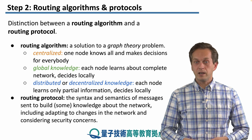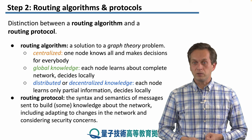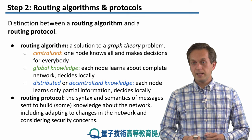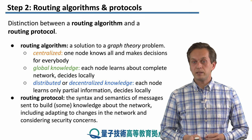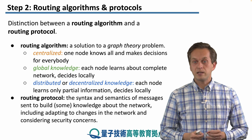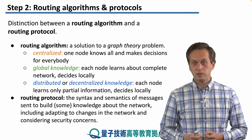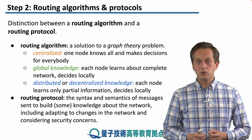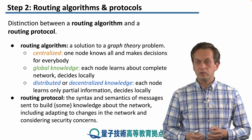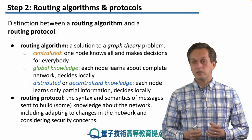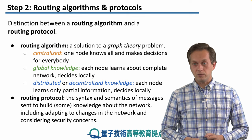On the other hand, a routing protocol tells us about the syntax and semantics of messages sent to build all or some knowledge about the network, including adapting to changes in the network and considering security concerns.